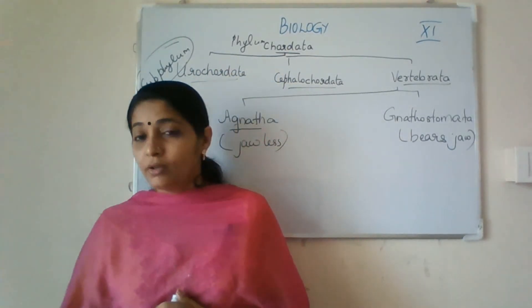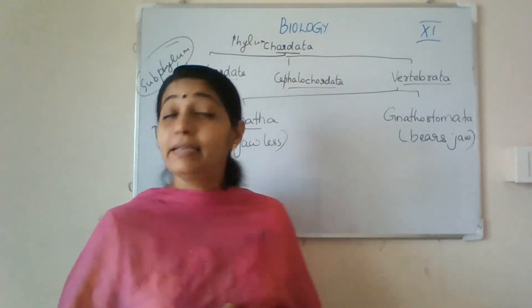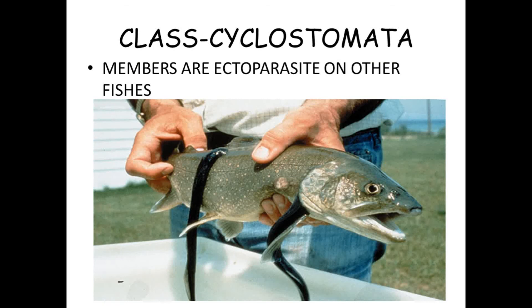We will see the features of Agnatha and its examples. Agnatha is coming under subphylum Vertebrata. They lack jaws — Agnatha includes jawless animals. Agnatha includes the class Cyclostomata. Members are ectoparasites on other fishes. The members of class Cyclostomata live on the body of other fishes as ectoparasites.